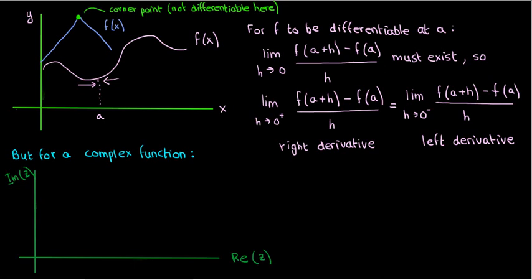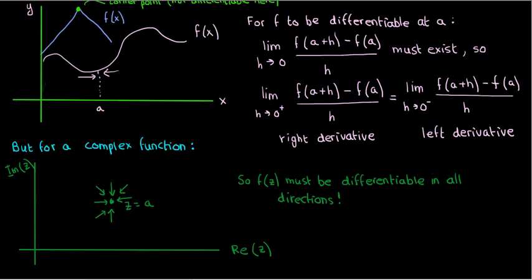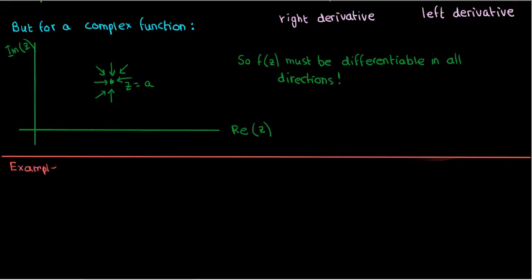However, a complex number doesn't just exist on a number line, it exists on a whole plane, so it can approach a value a from above, below, left, right, from any diagonal direction. So a complex function has to be left differentiable, right differentiable, up differentiable, down differentiable, and diagonally differentiable, and it has to have its derivatives from all those directions equal each other for it to be considered differentiable at a given point a. So clearly this is a pretty strict requirement, but because this requirement is so strict, once we satisfy it we'll have some really powerful results.